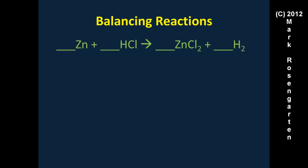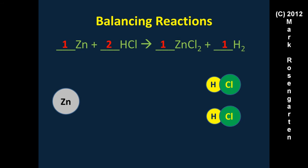Example four: zinc plus hydrochloric acid forms zinc chloride and diatomic hydrogen. We have one zinc on each side — balanced. We have one H on the left and two Hs on the right, so we put a two in front of HCl. That gives two Hs on both sides. Putting a two in front of HCl also gives two chlorines on the left, and we already have two chlorines on the right. Double-checking: one zinc on each side, two Hs on each side, two chlorines on each side — balanced.